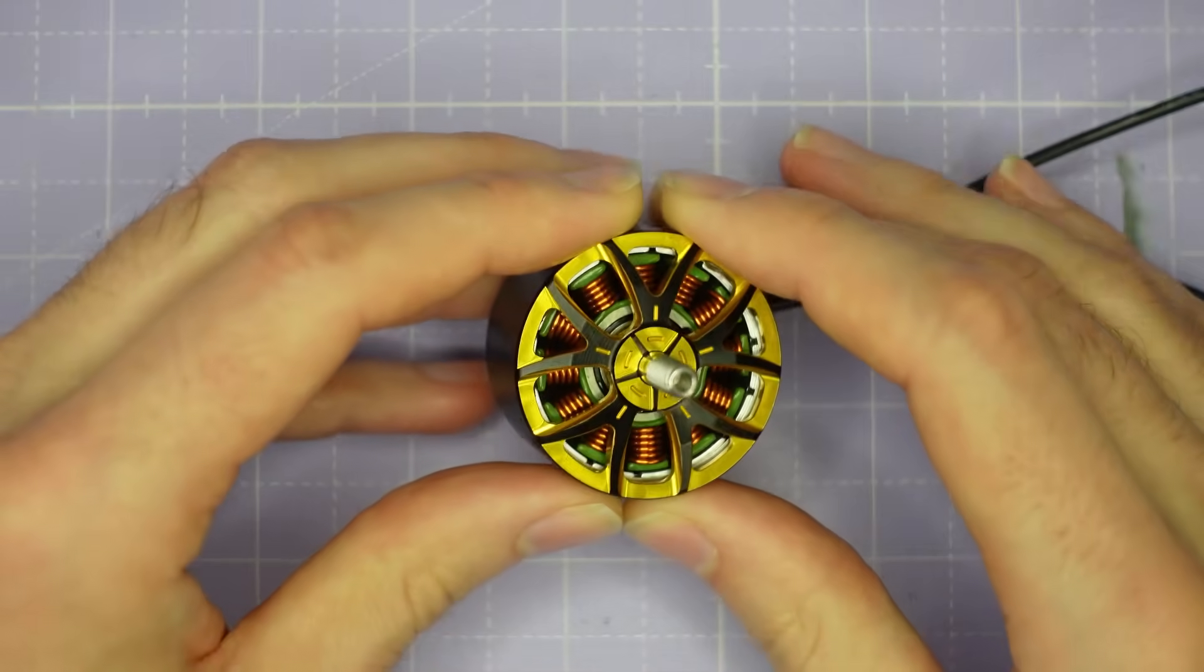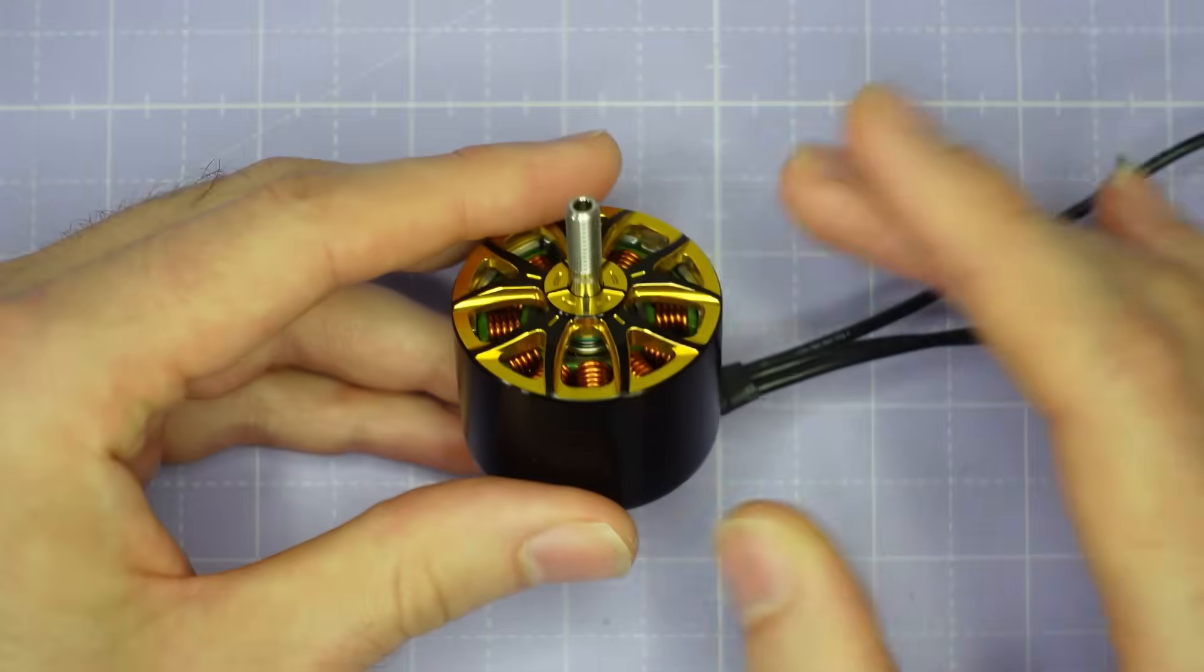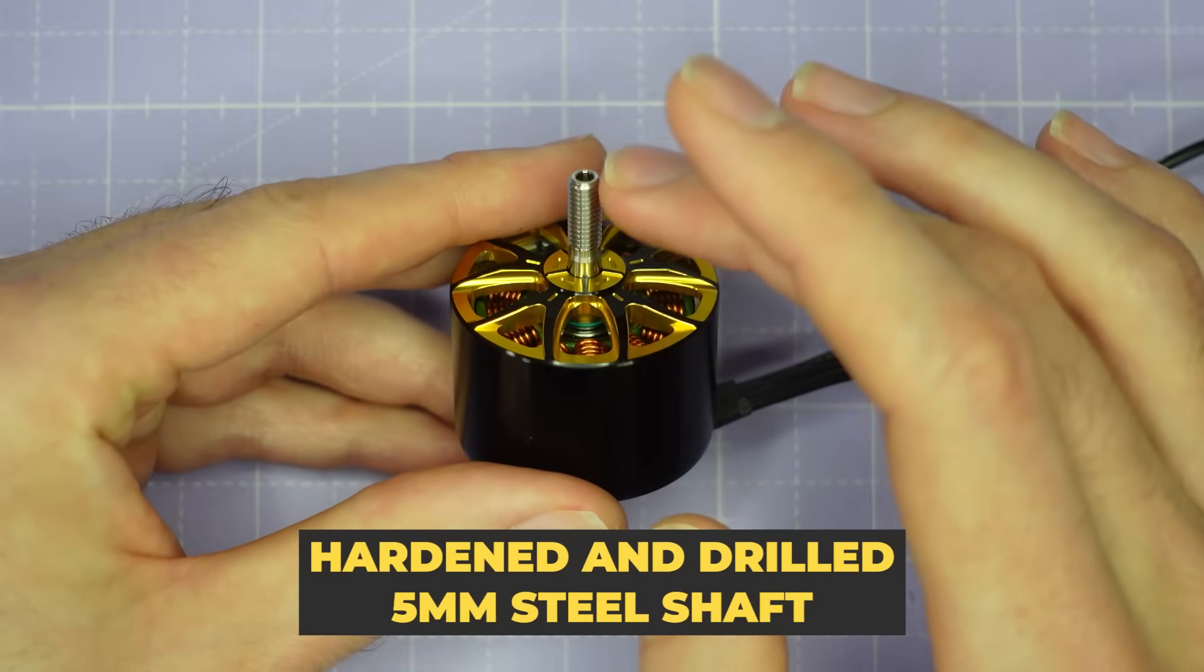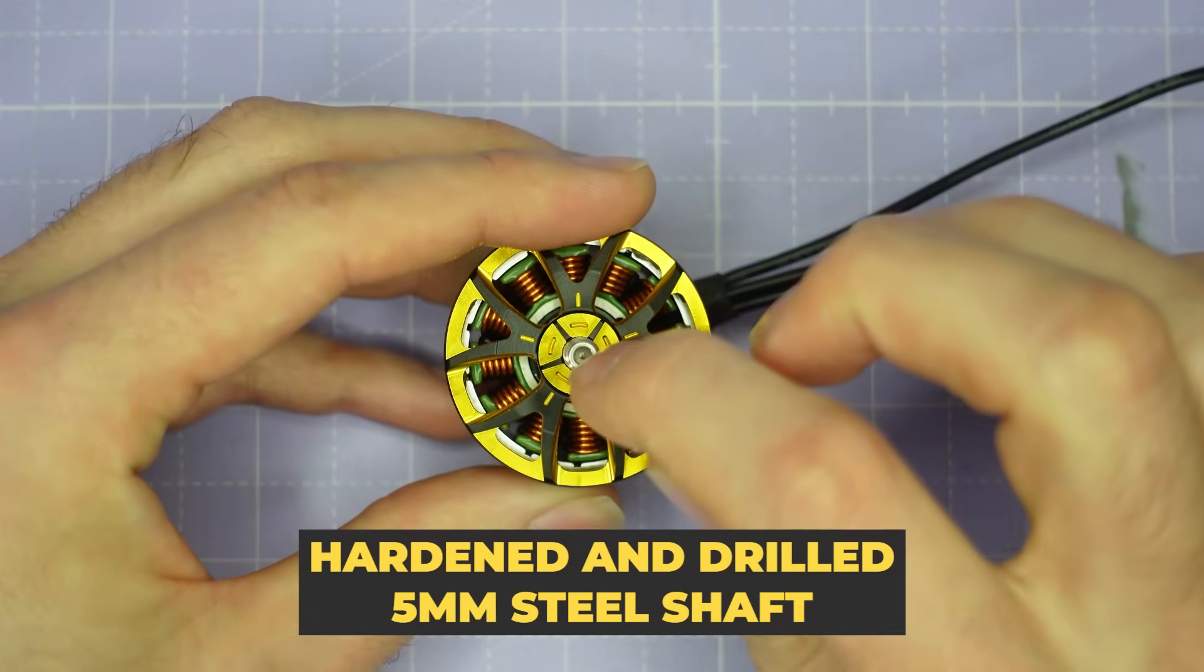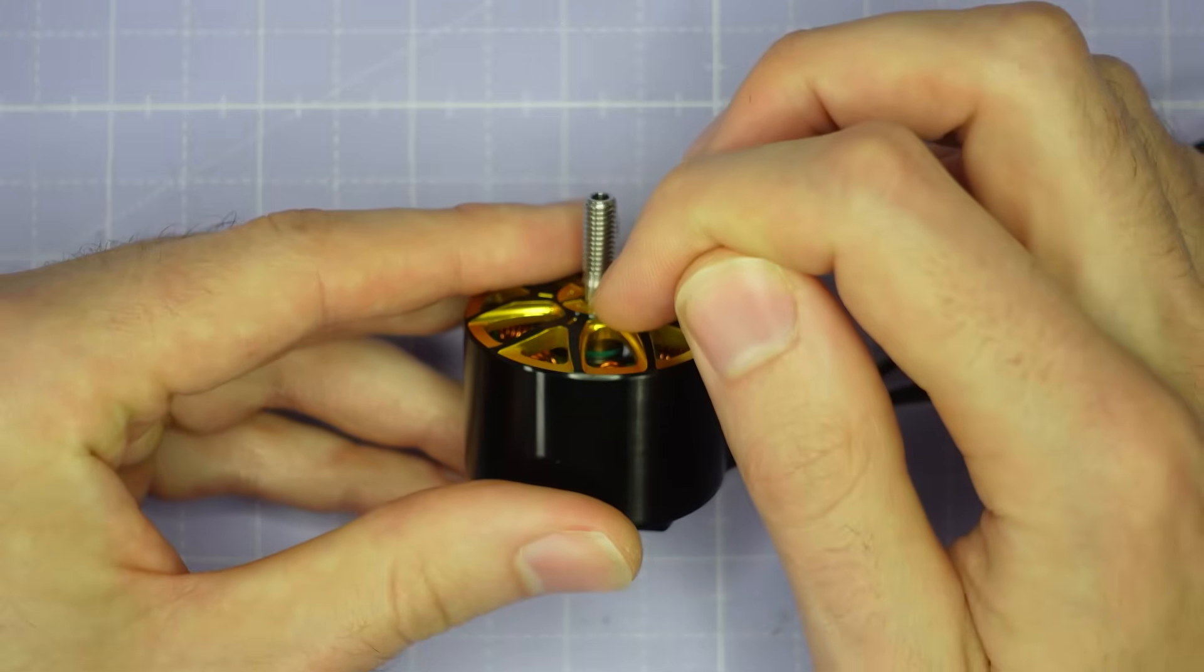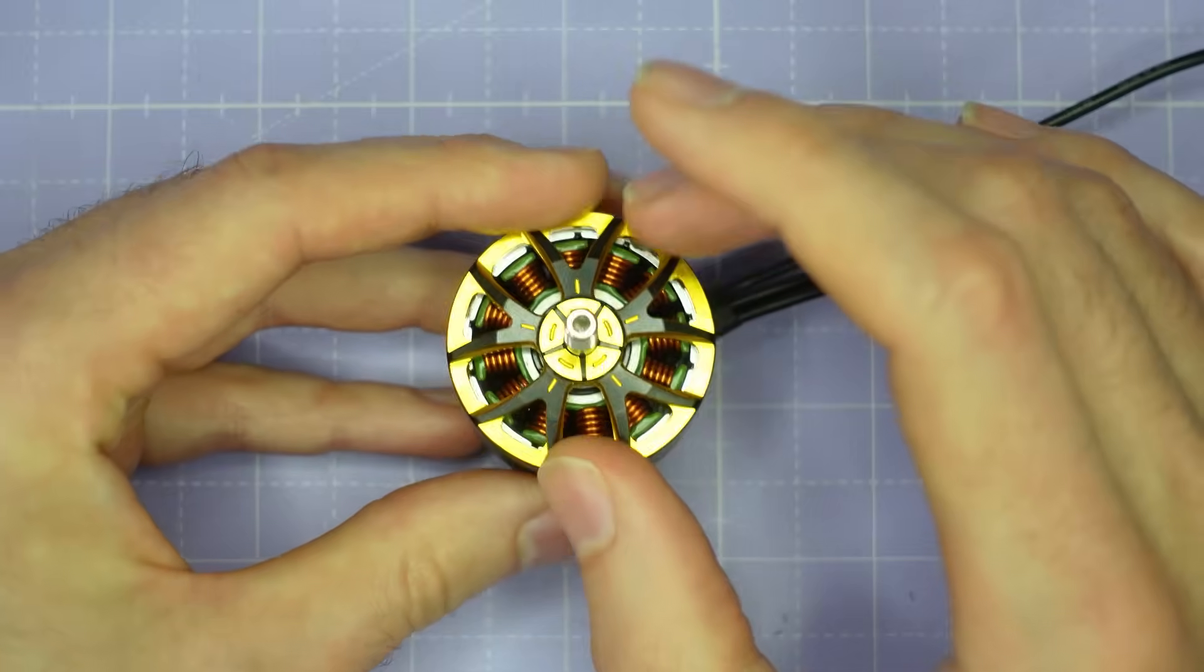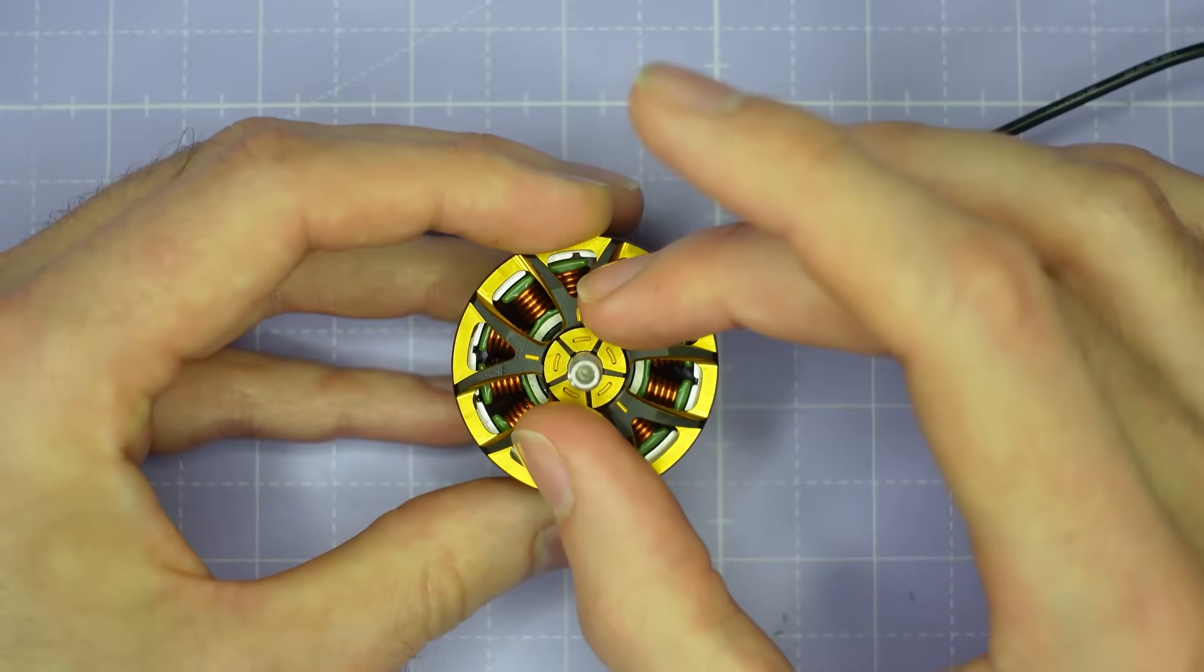So here it is the AOS Supernova 3220 and let me take you through all of the key features nice and quickly. We have a hardened steel 5mm shaft that's been centre drilled top and bottom to reduce weight and the shaft is 18mm long with a 6mm shoulder to better suit the larger props that you're going to run on these motors.